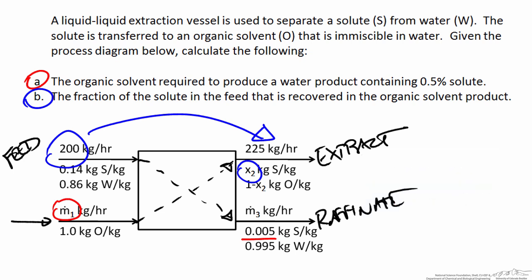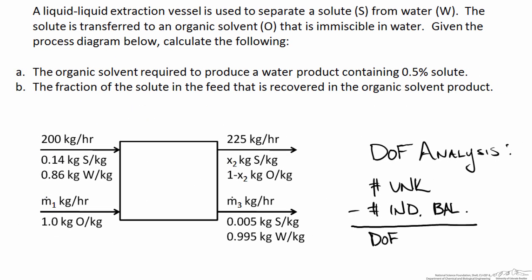Before we start setting up a system of mass balances, it's generally a good idea to find out if we have enough information to solve for what's asked. We can quickly determine this by conducting a degree of freedom analysis. The degrees of freedom for a process is given by the number of unknowns minus the number of independent balances that relate those unknowns. Looking at the process diagram, we have three unknowns: M1, the composition in the extract x2, and M3. We can write an independent balance for as many species as we have — in this case three: S, O, and water — so we can write three independent balances.